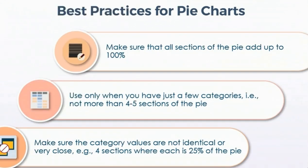There are some best practices to follow for pie charts. Make sure that all sections of the pie add up to 100%. Use pie charts only when you have just a few categories — no more than 4 to 5 sections. You should also make sure that category values are not identical or very close to each other, such as four sections each at 25% of the pie.